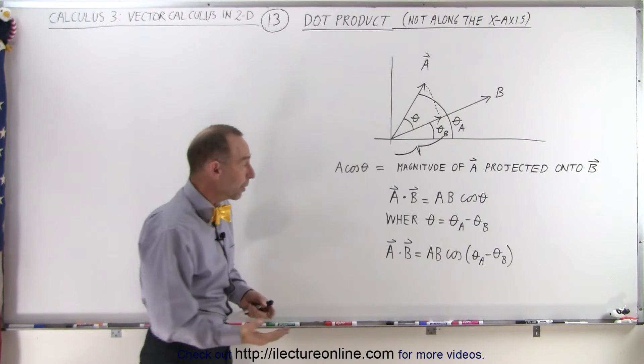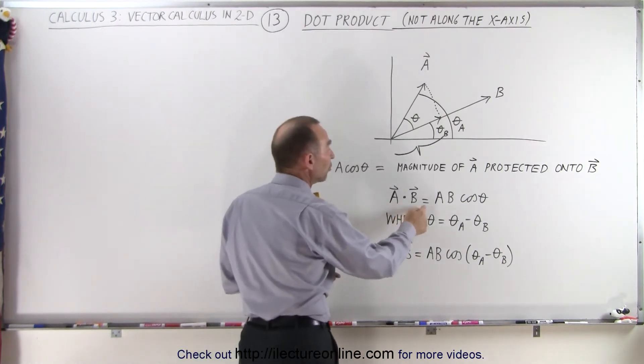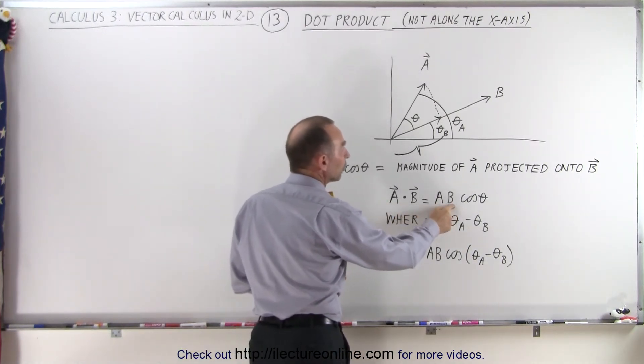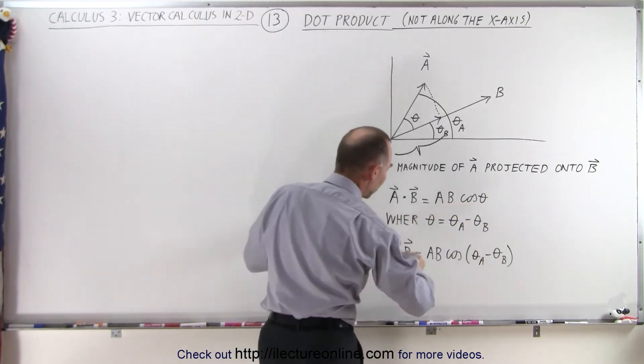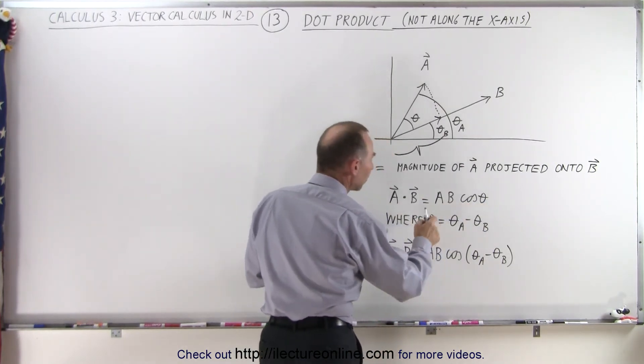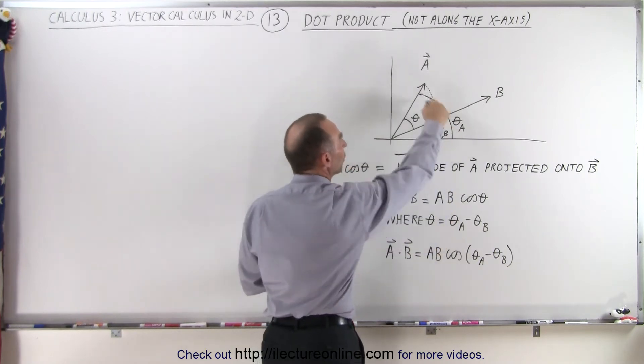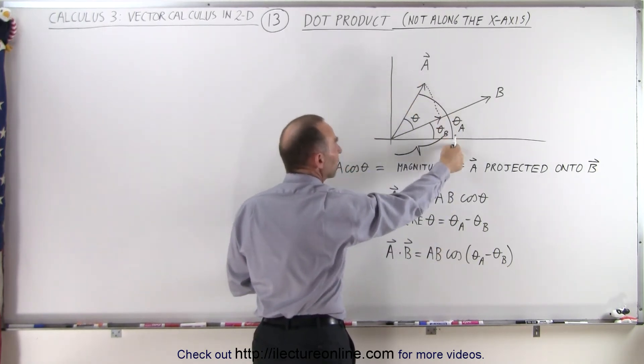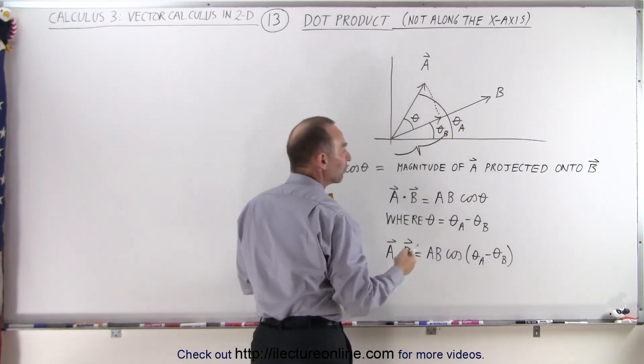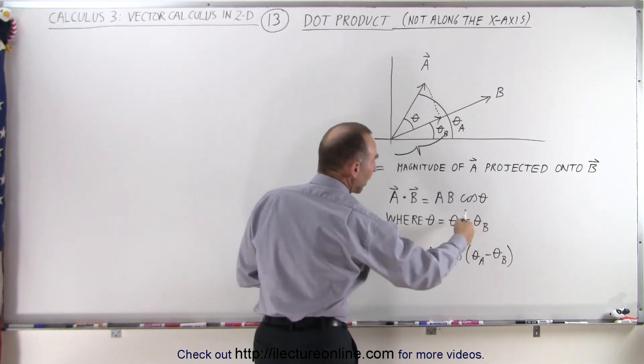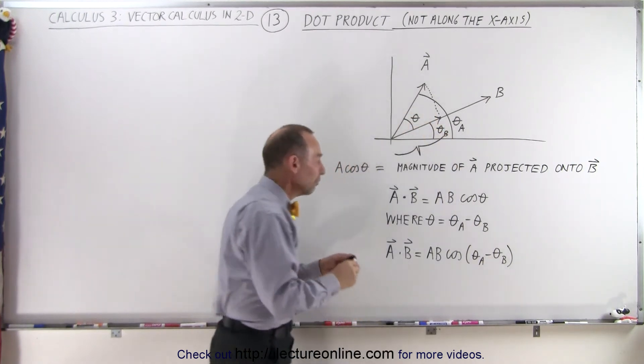And so since the dot product is A dot B, which is the magnitude of A times the magnitude of B times the cosine of the angle between them, and theta is simply equal to theta sub A, the angle that A makes relative to the x-axis, and theta sub B is the angle that B makes relative to the x-axis. So the difference of those two angles is the angle between the two vectors.